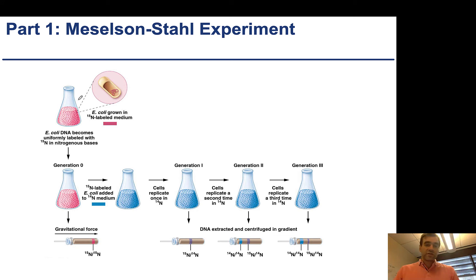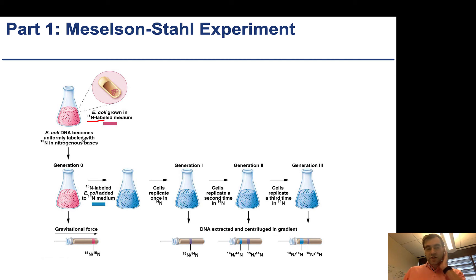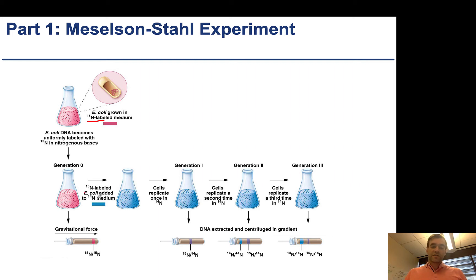Initially, they grew the cells in N-15-labeled medium, so all of the DNA produced incorporates this N-15 nitrogen. DNA is uniformly labeled with N-15. Then at generation zero, they switched the media by spinning down the bacterial cells and adding new media that, instead of containing N-15, now contained N-14. The bacteria bring that nitrogen into the intracellular space to create nucleotides, so the nucleotides go from being N-15 to N-14.